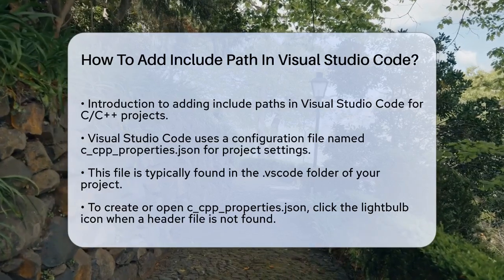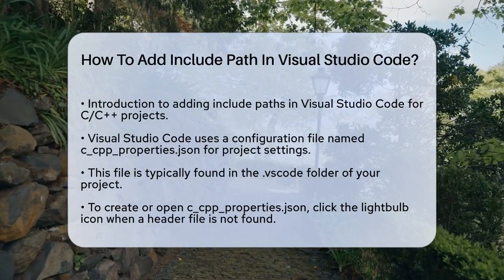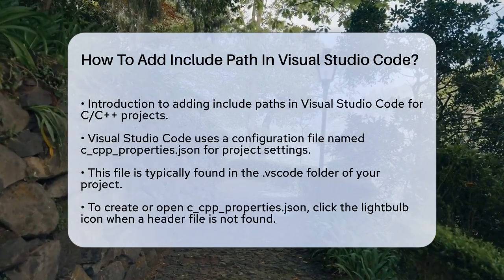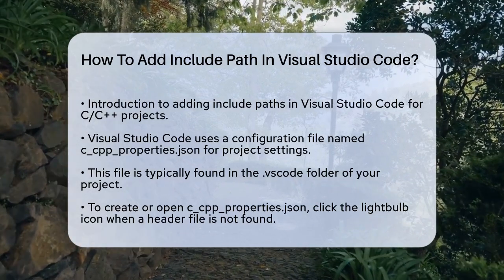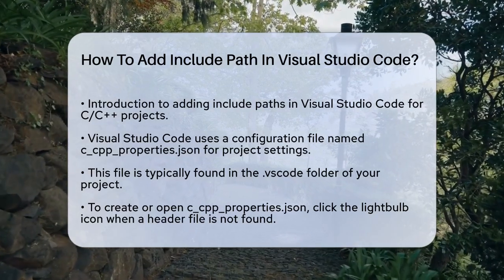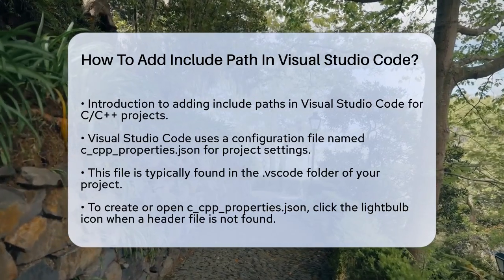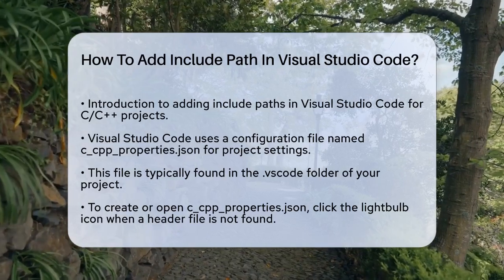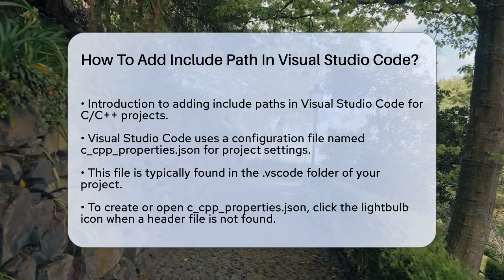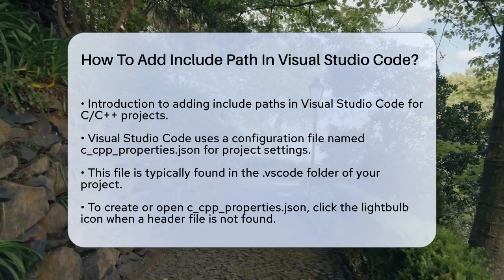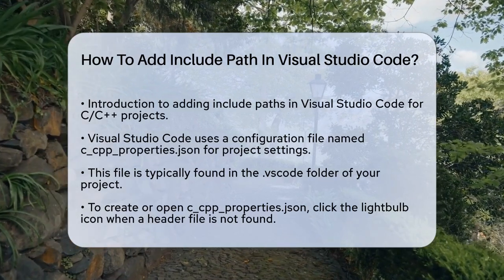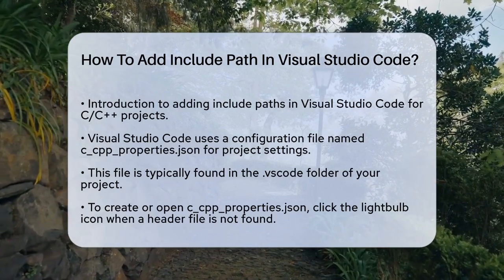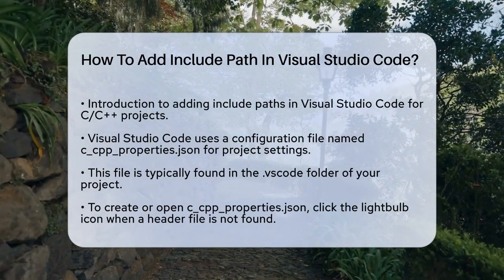First, you need to understand that Visual Studio Code uses a configuration file called c_cpp_properties.json to manage settings for your C and C++ projects. This file is usually located in the .vscode folder of your project. To add an Include Path, you need to open or create this c_cpp_properties.json file. If it doesn't exist, you can create it by clicking on the lightbulb icon that appears when VS Code complains about not finding a header file, and then select Update Include Path Setting.